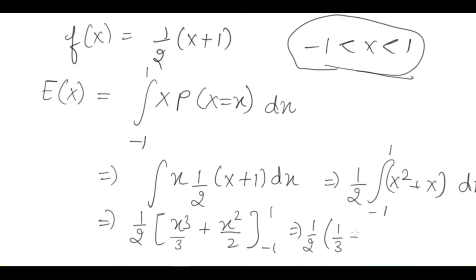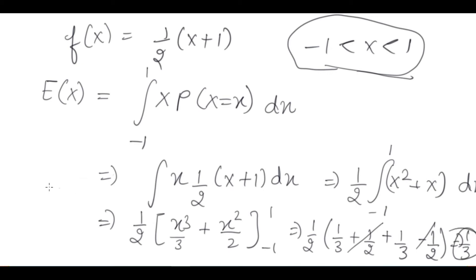Putting in the values: 1 by 3 plus 1 by 2, minus negative 1 by 3. Then it would be minus 1 by 3. So these terms cancel out and we get the answer. I hope the expectation comes out to the correct value. Now we will use properties before giving more examples — Properties of Expectation.